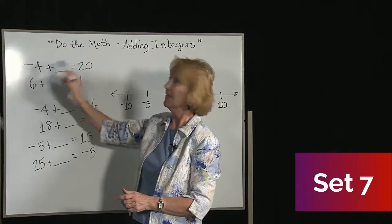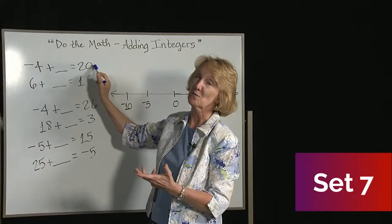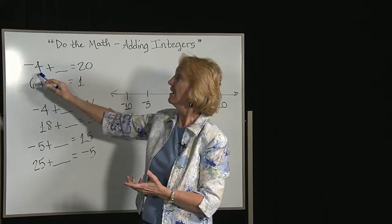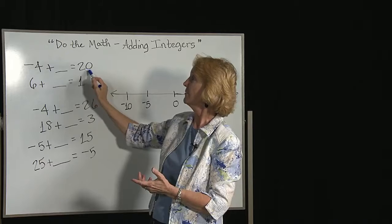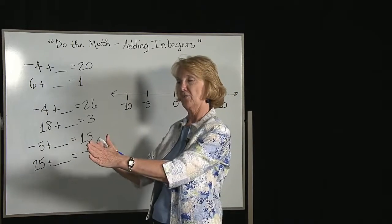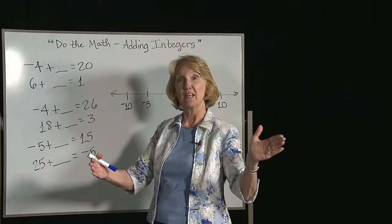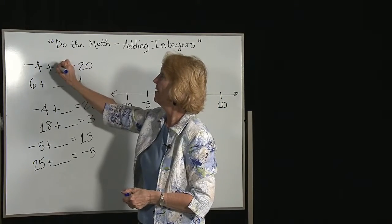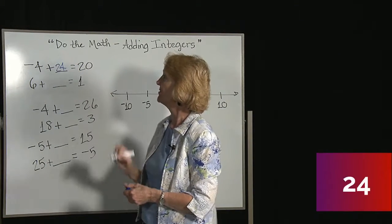If we're at negative 4 and we end up with positive 20, which means we must have added something. We got out of the negatives, and then we added and got to 20. So we had to get from negative 4 to 0, and then from 0 to 20. So we added a total of 4 plus 20, which is 24.